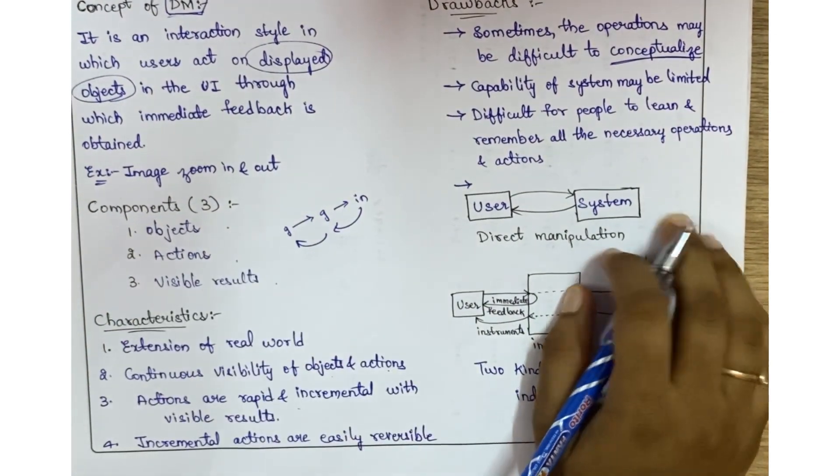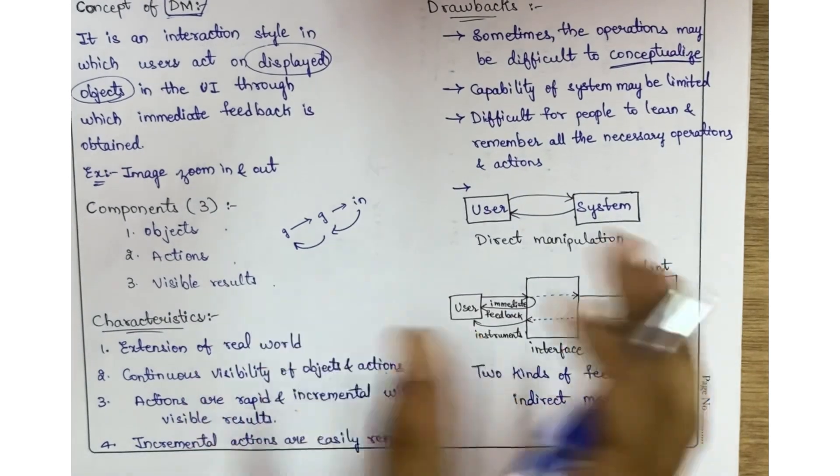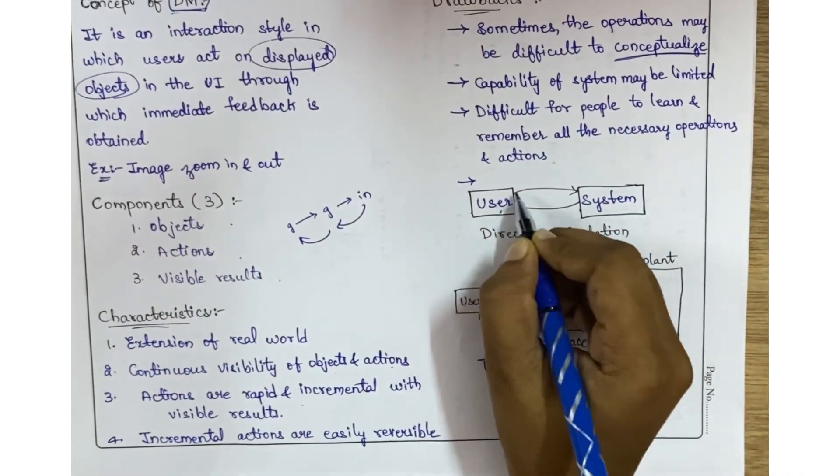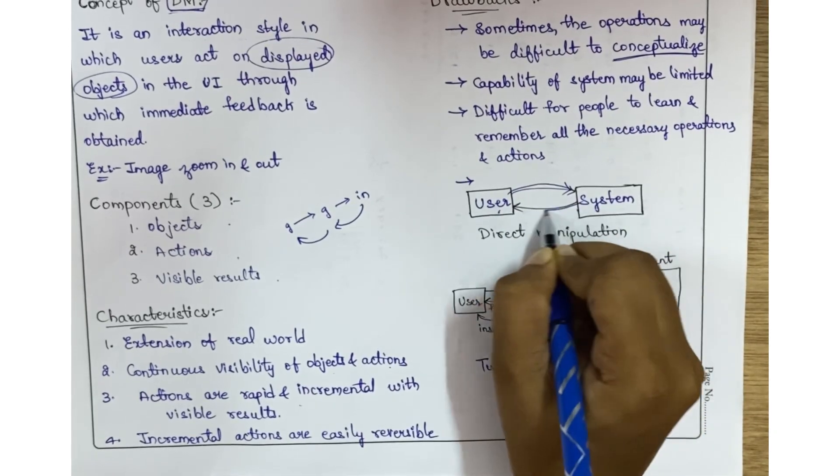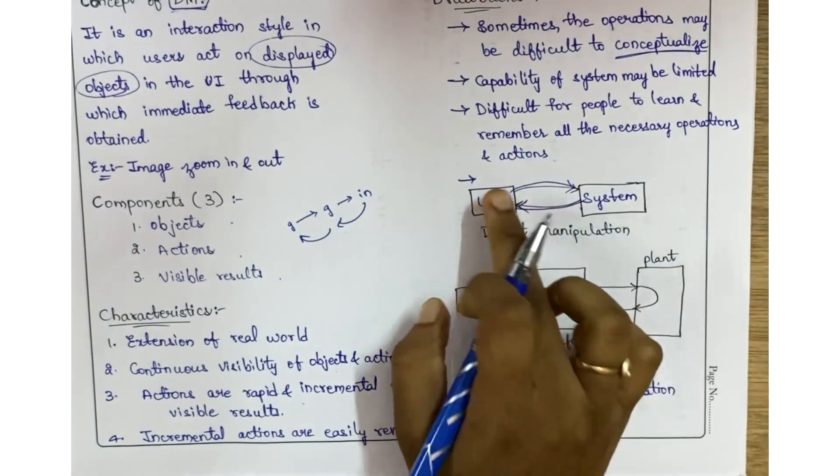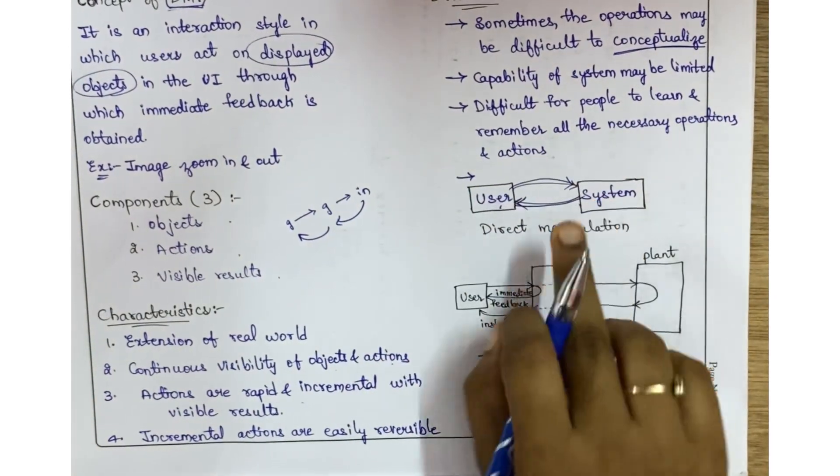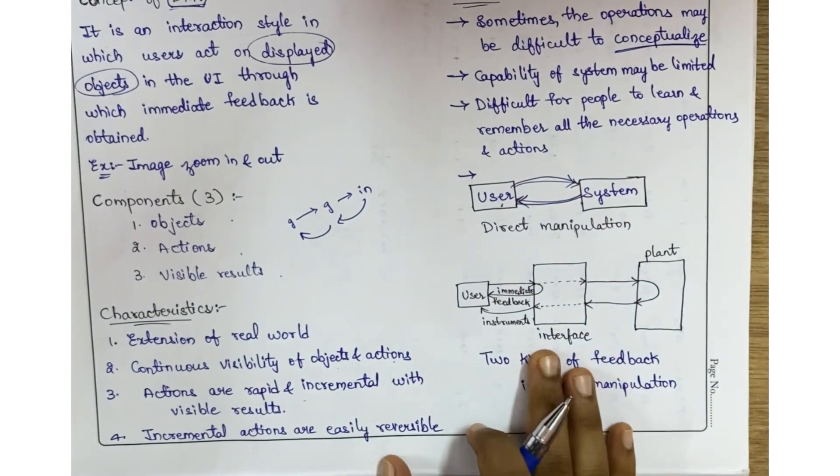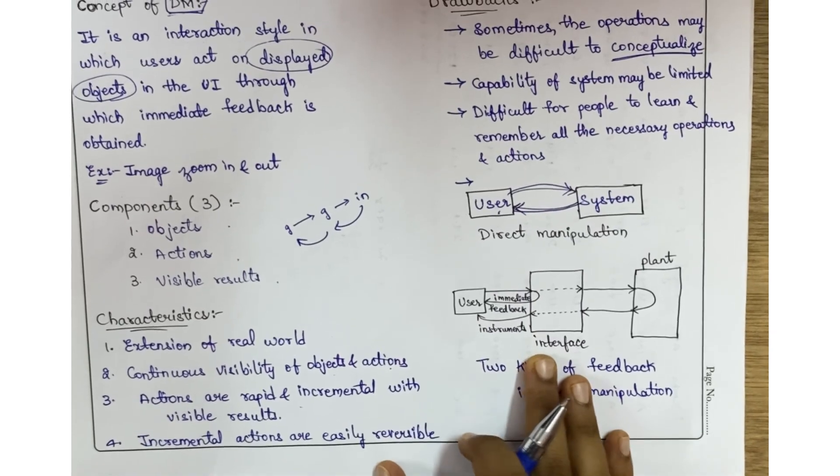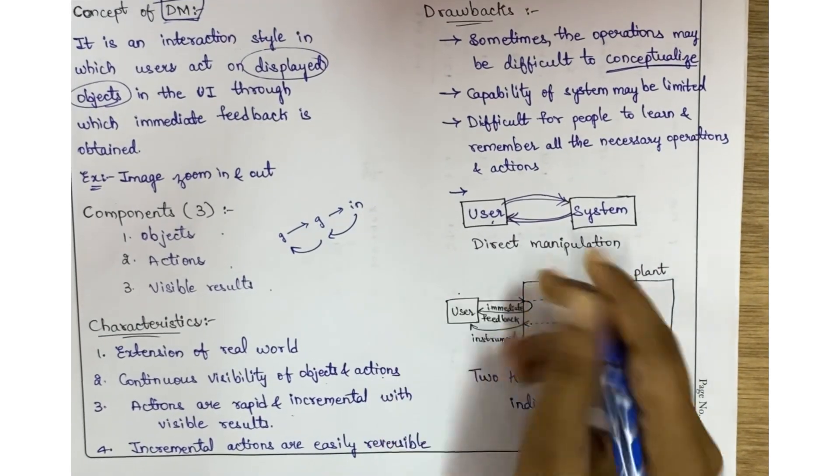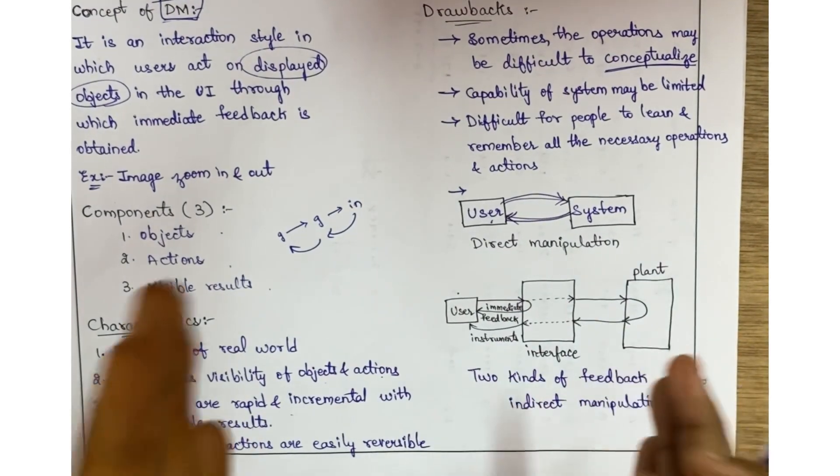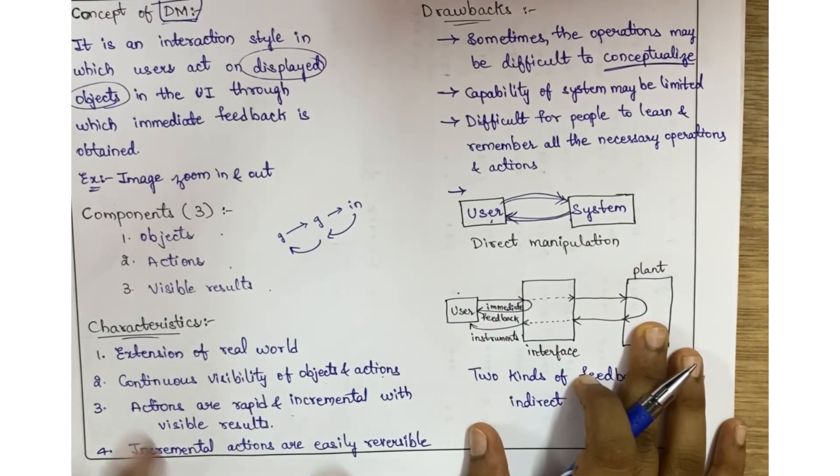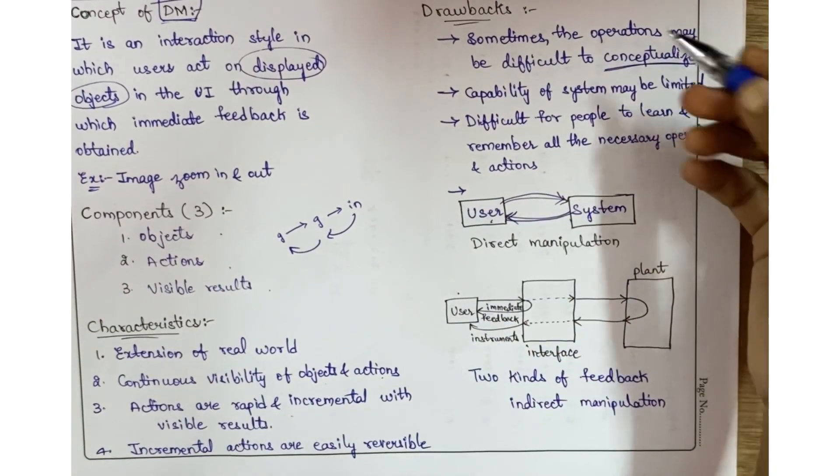I want to represent direct manipulation as a simple diagram. Here, a user can directly interact with the system and will immediately get the results. He is directly interacting with the system - this is direct manipulation. In indirect manipulation, he will be getting two different feedbacks. The user is not directly interacting with the system; there will be some interface in between. Because of this, the drawbacks like conceptualizing are overcome in indirect manipulation.